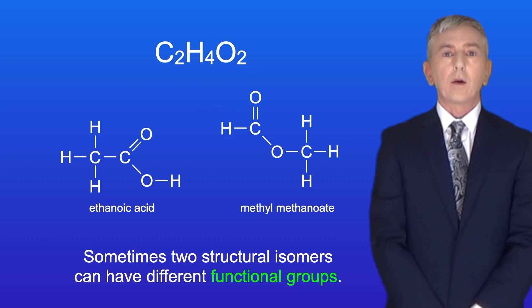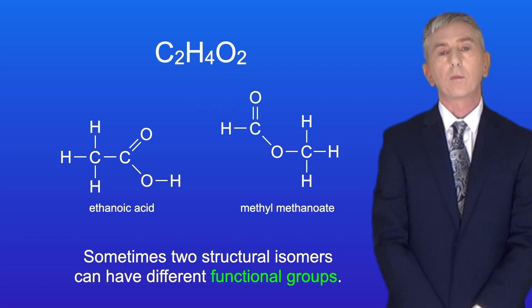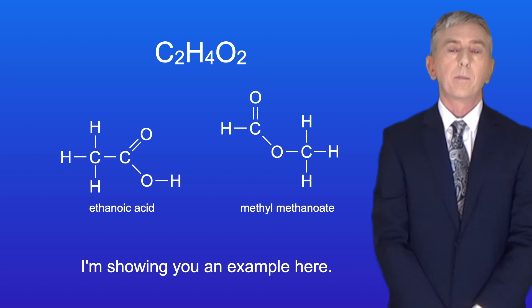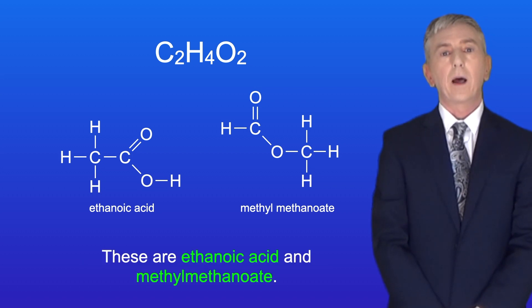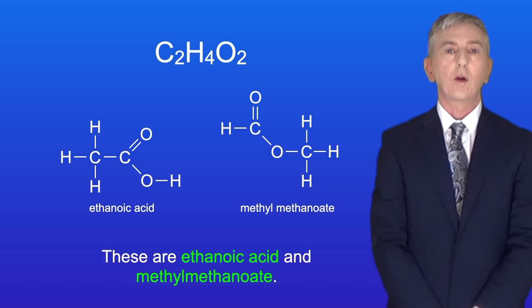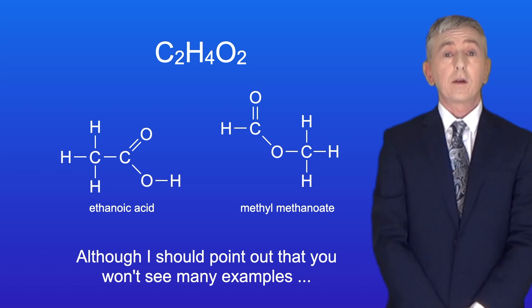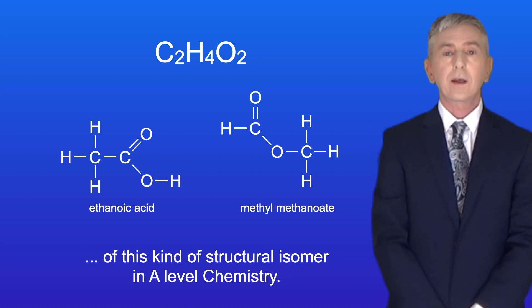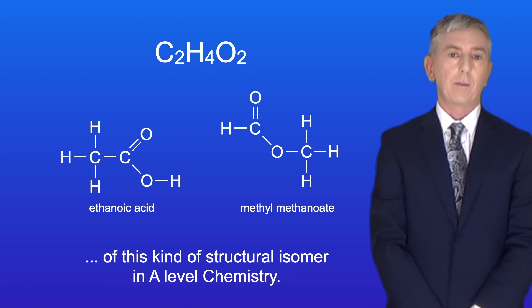Sometimes two structural isomers can have different functional groups. For example, ethanoic acid and methyl methanoate are functional group isomers, though you won't see many examples of this kind of structural isomer in A-level chemistry.